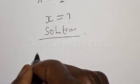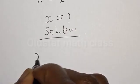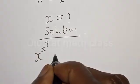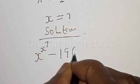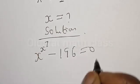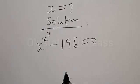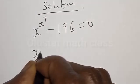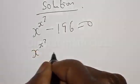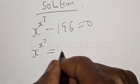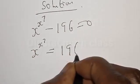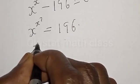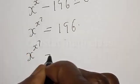Solution. We have the given equation: s raised to power s raised to power 7 minus 196 is equal to 0. Therefore, s raised to power s raised to power 7 is equal to 196.